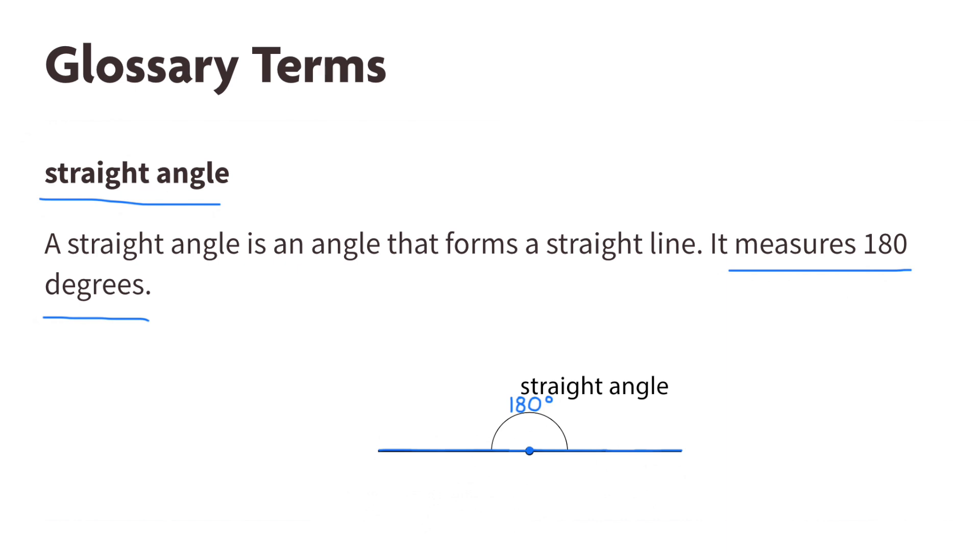A straight angle is an angle that forms a straight line. It measures 180 degrees.